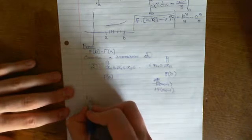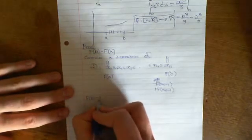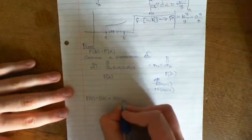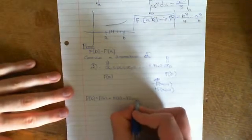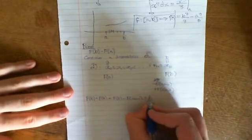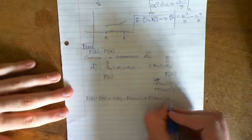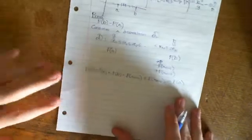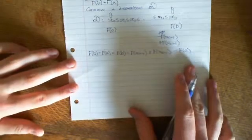I'm saying that F(B) minus F(A) is equal to F(B) minus F(xₙ₋₁) plus F(xₙ₋₁) minus F(A). I've not done anything incredibly fancy there, although this is going to be incredibly clever, what we're going to do.